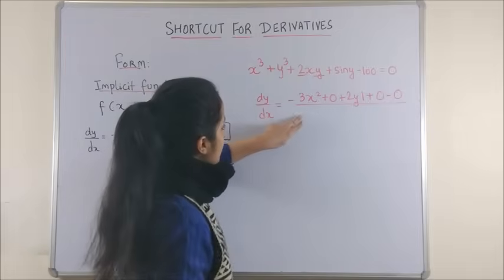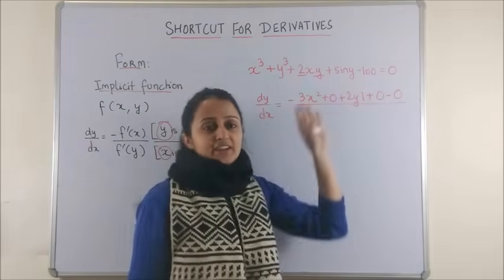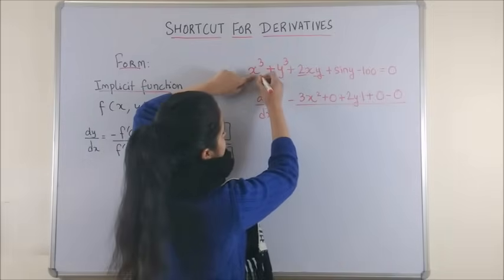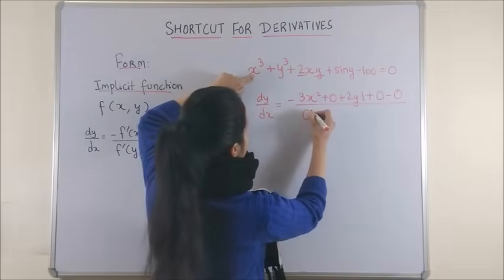Similarly, for the denominator, I differentiate the entire function with respect to y. So, x has to be treated as a constant, this becomes 0.